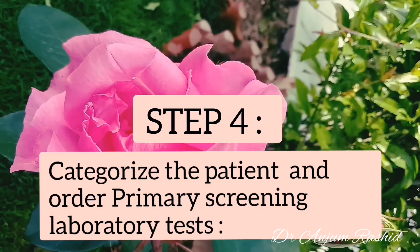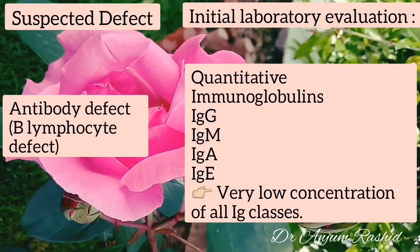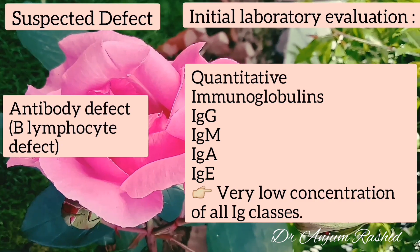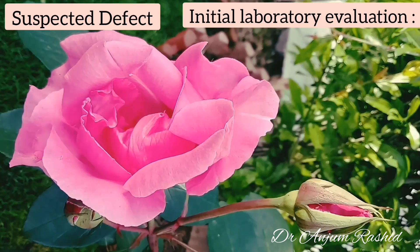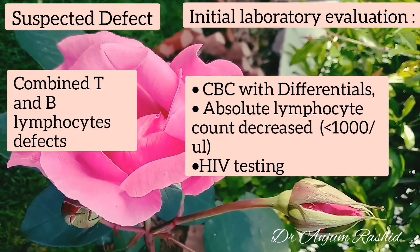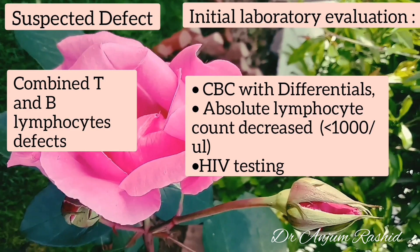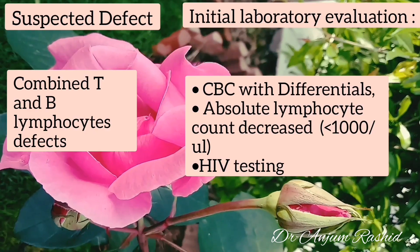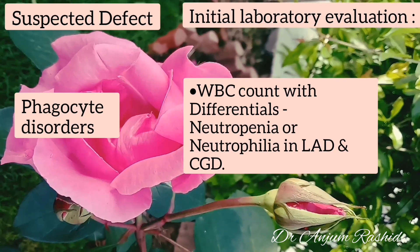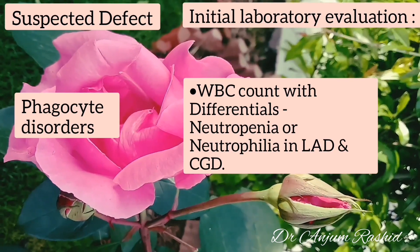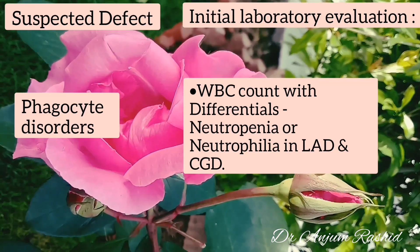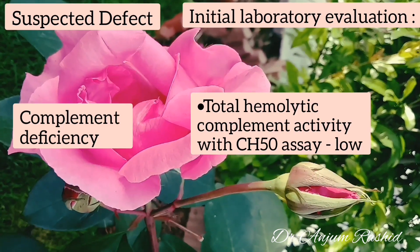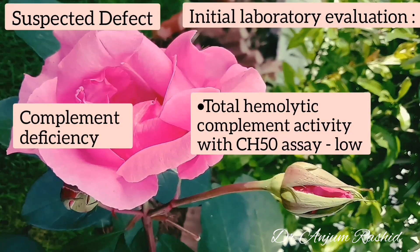The fourth step is to categorize the patient and order primary screening laboratory tests. For antibody defects, order quantitative immunoglobulin levels — IgG, IgM, IgA, and IgE — which will be very low across all immunoglobulins. For combined T and B lymphocyte defects, order a complete blood cell count with differentials; absolute lymphocyte count will be decreased below 1000 per microliter, and HIV testing should also be done. For phagocyte disorders, order WBC count with differentials — there is usually neutropenia, but neutrophilia in leukocyte adhesion defects and chronic granulomatous disease. For complement deficiency, total hemolytic complement activity with the CH50 assay is usually low.